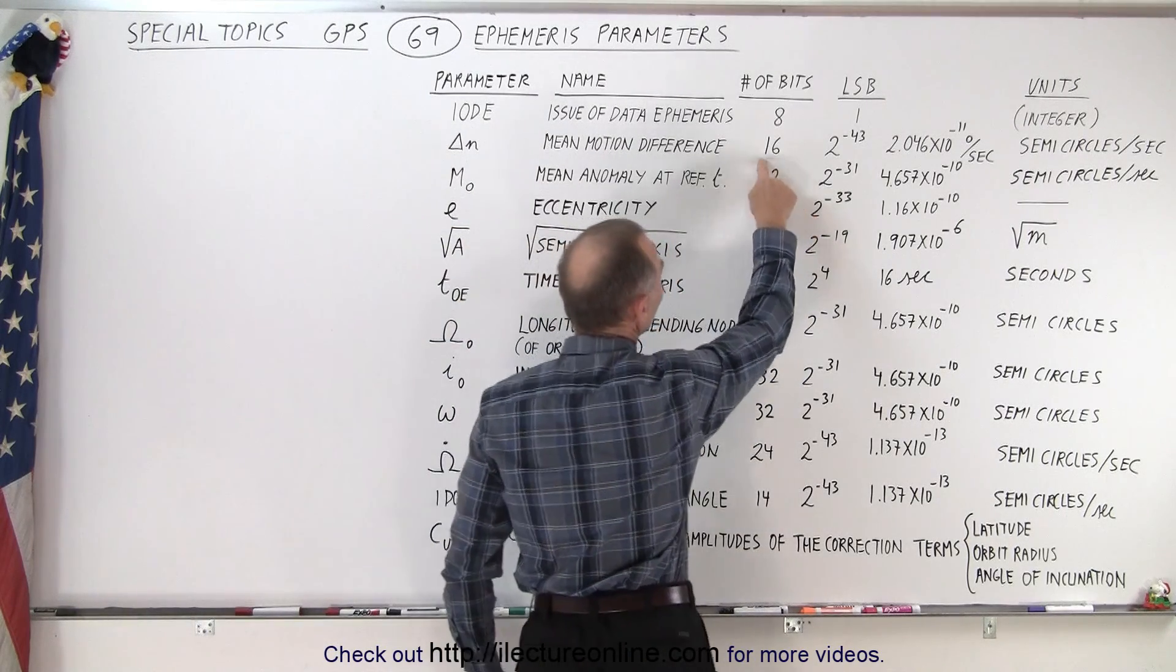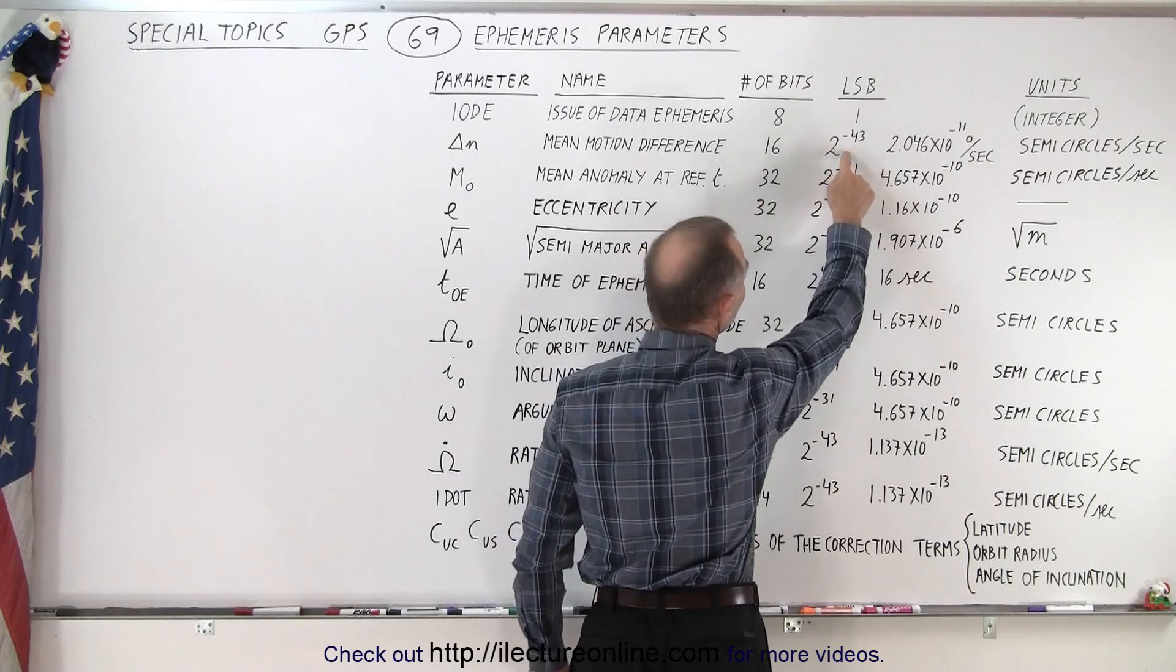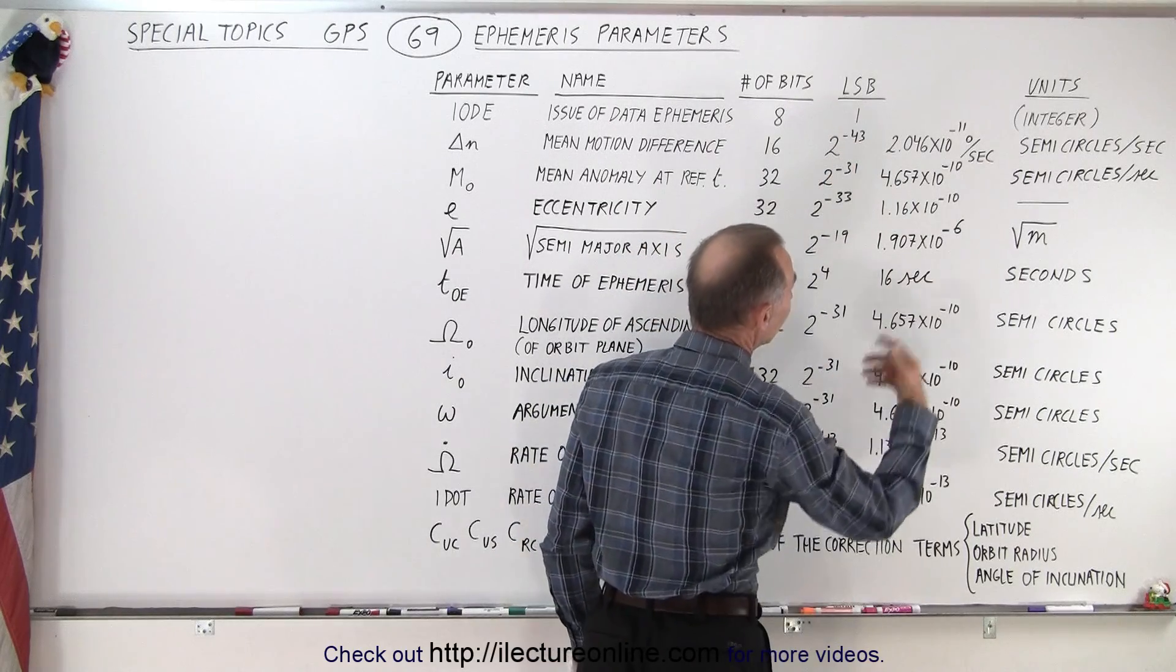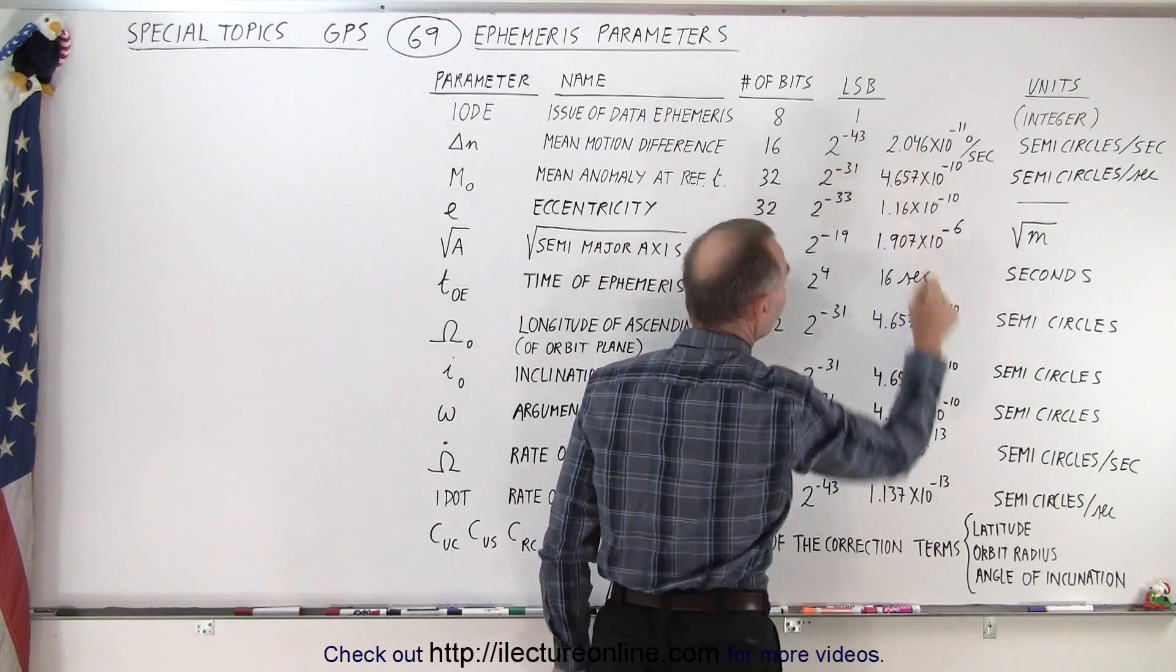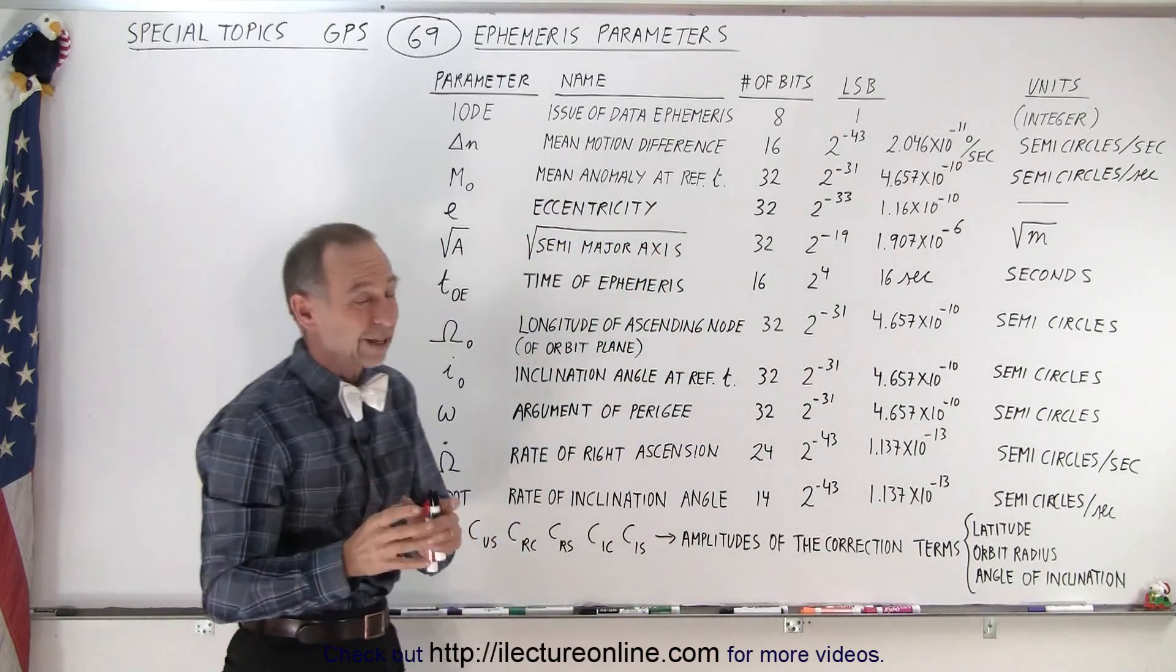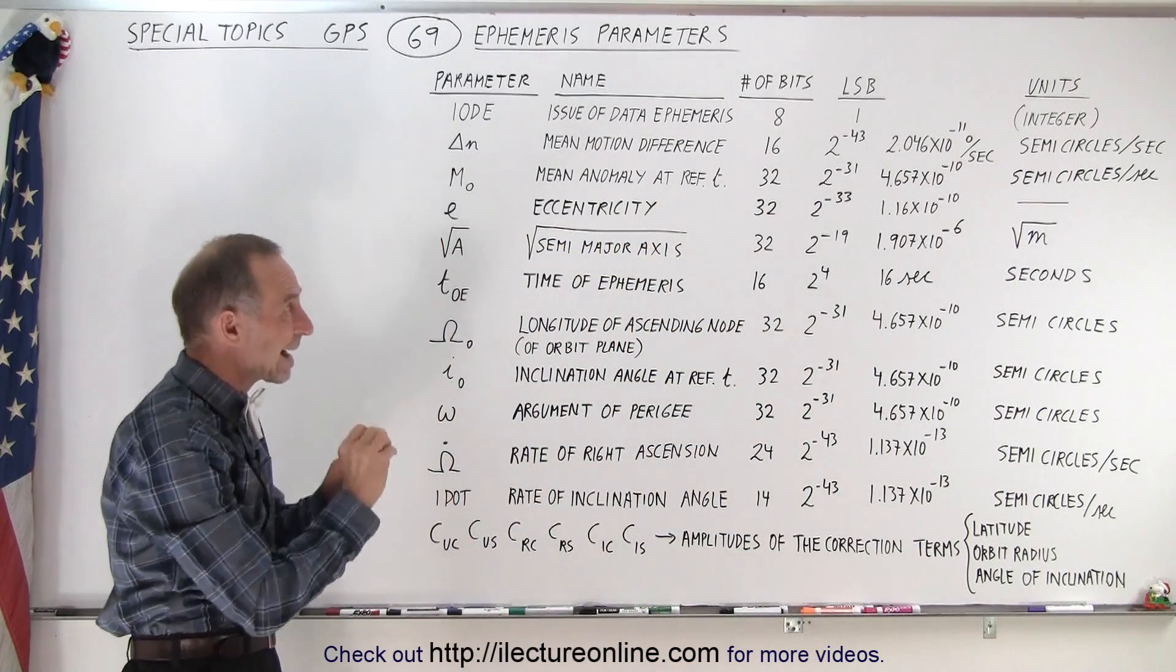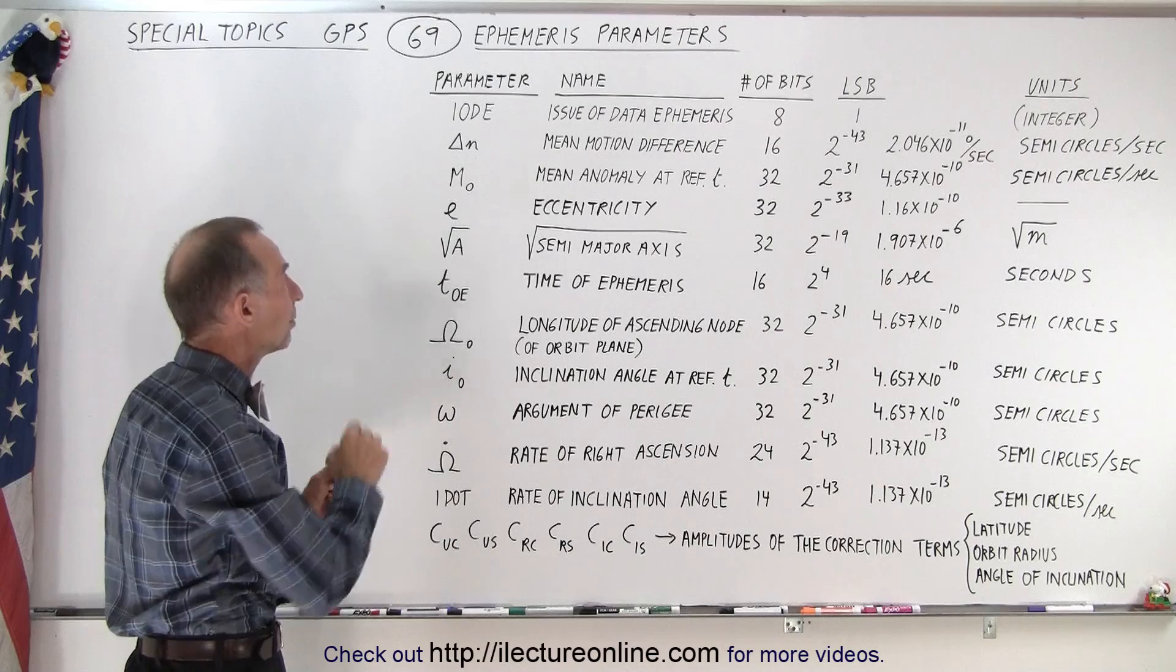Notice we're talking about very small numbers. We contain it within 16 bits but the 16 bits have an LSB of 2 to the minus 43. Essentially comes down to about 2 times 10 to the minus 11 degrees per second. Very tiny changes in the mean motion.